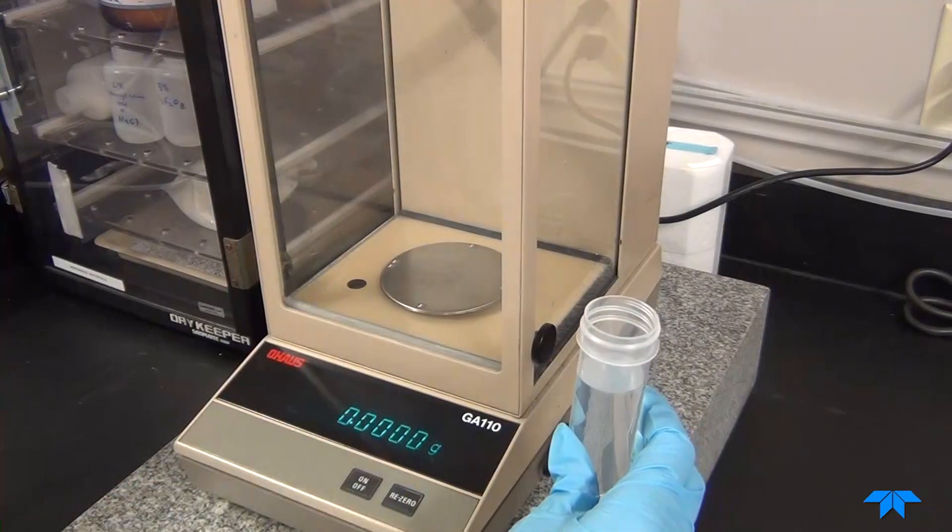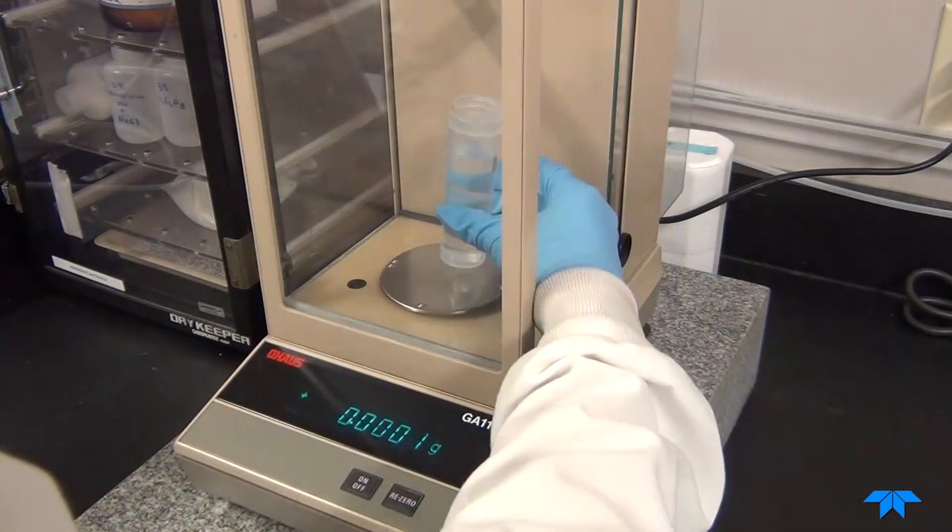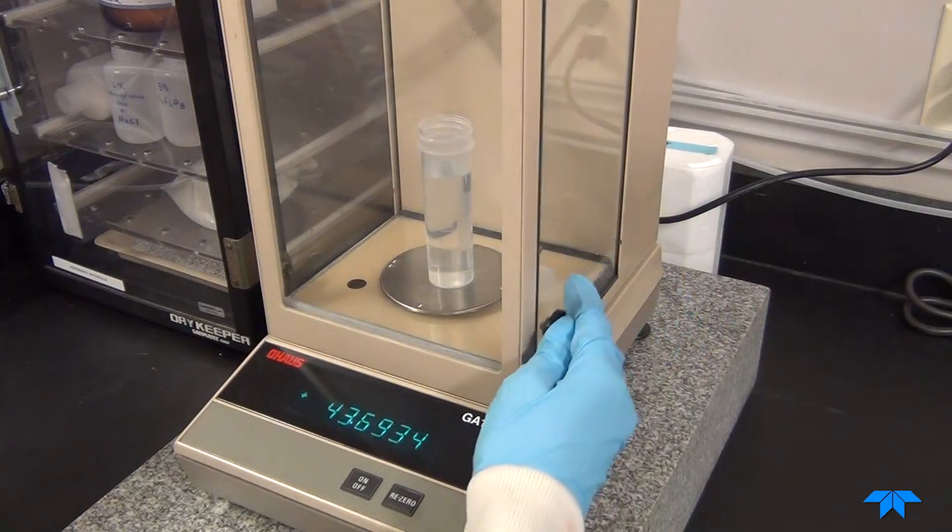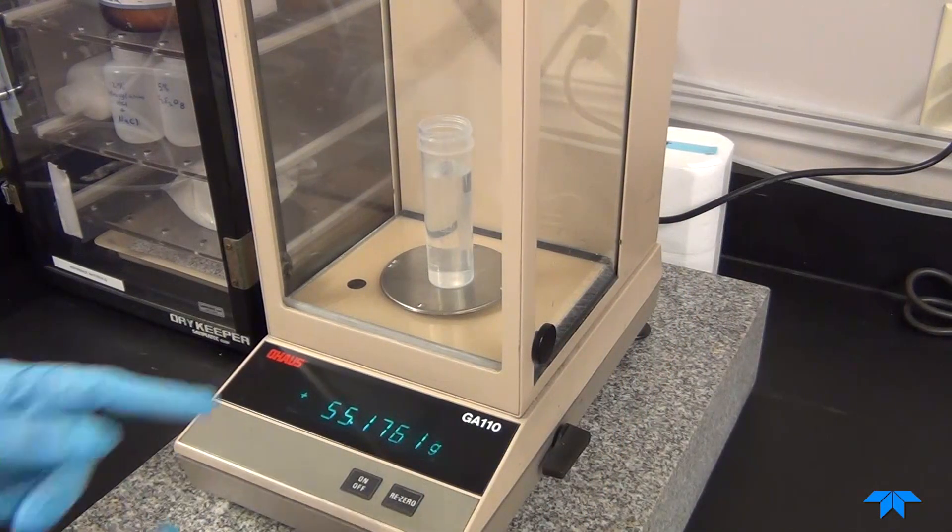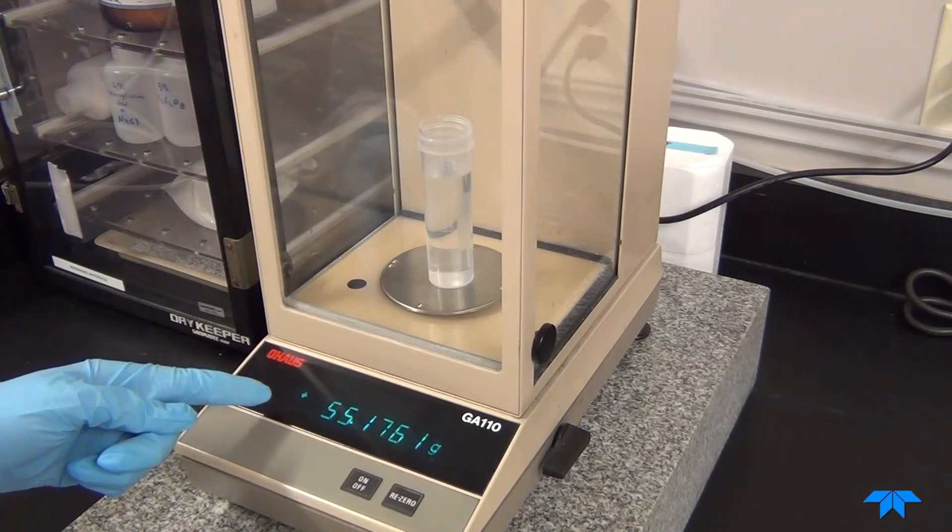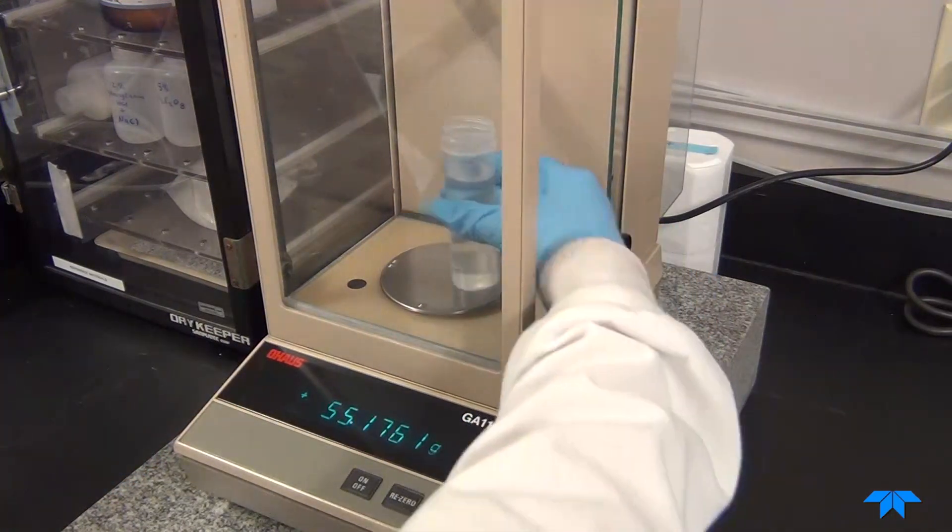Next, tare the balance, then place the container on the balance, allow it to stabilize, and record the starting weight of the container. This is the before weight. Our before weight is 55.18 grams.